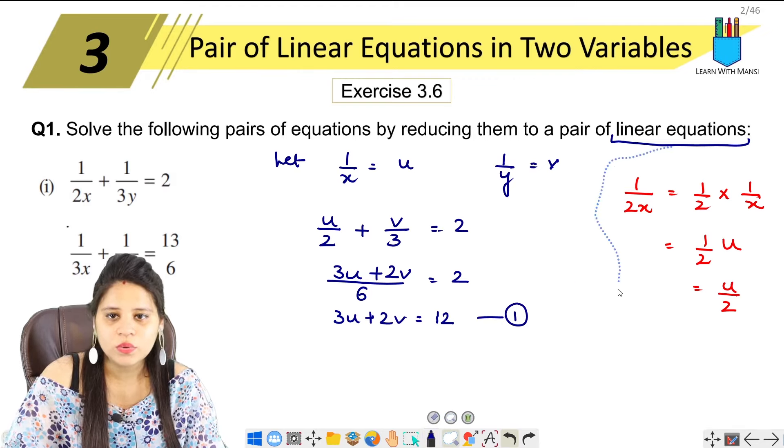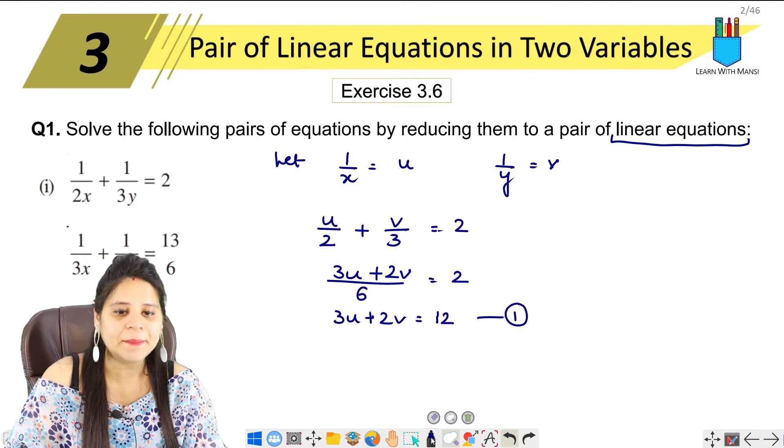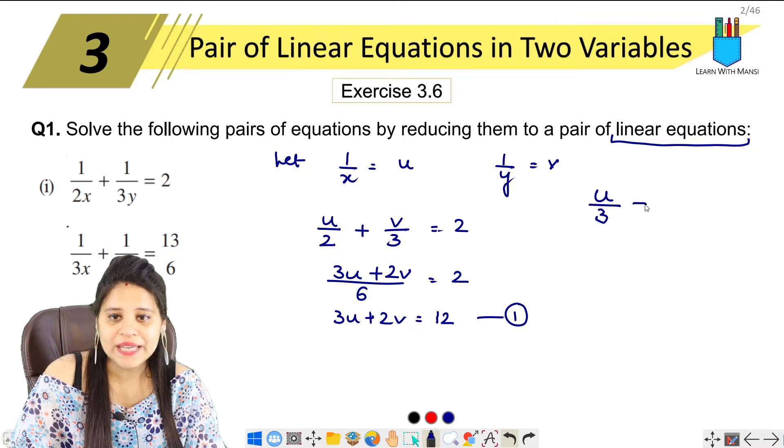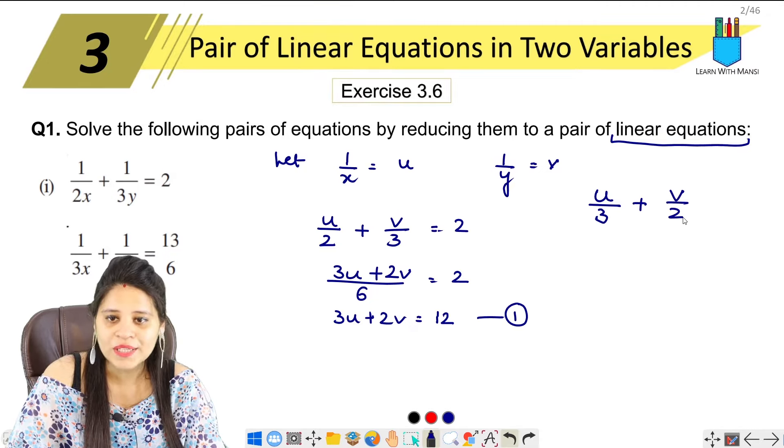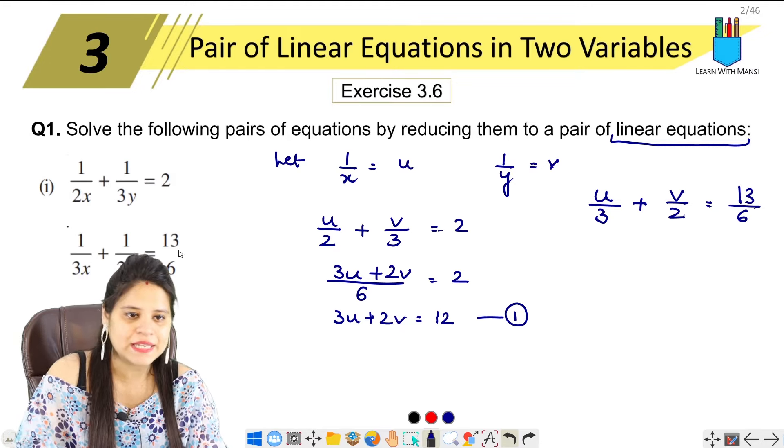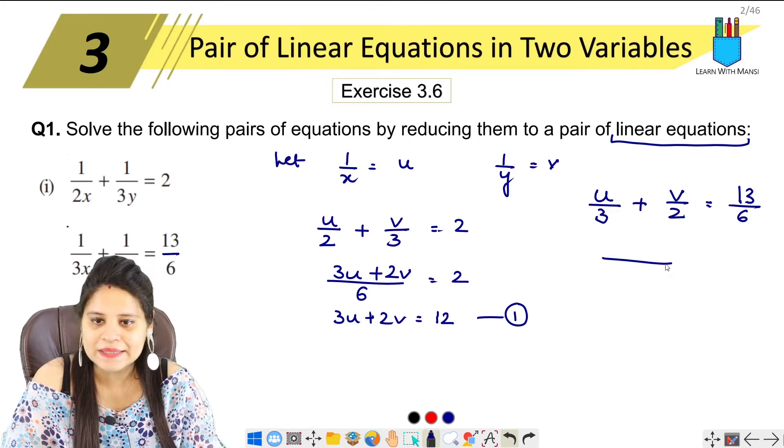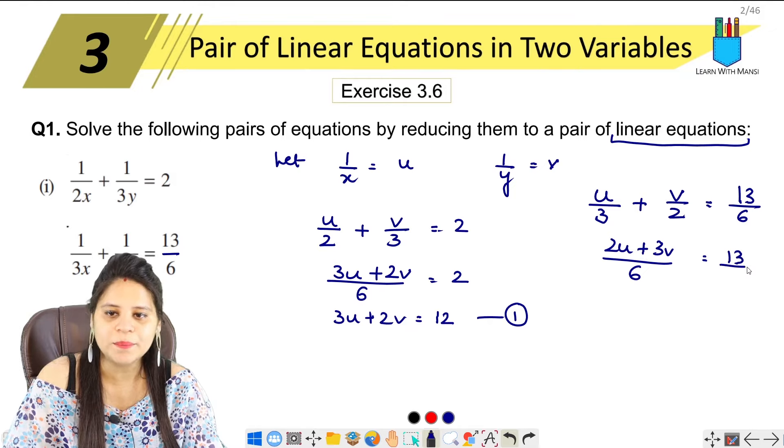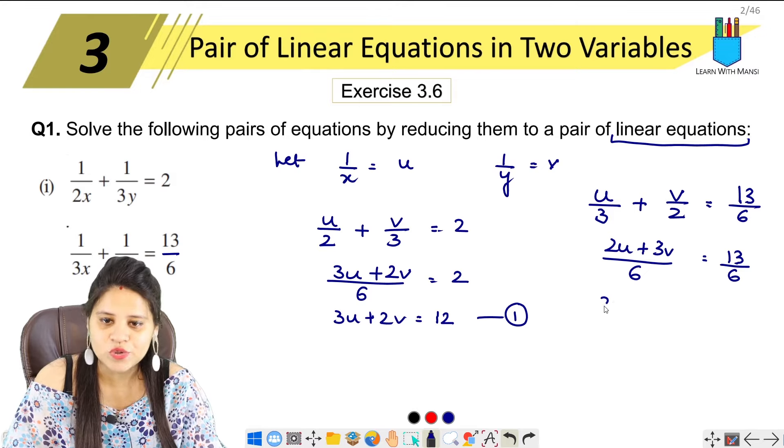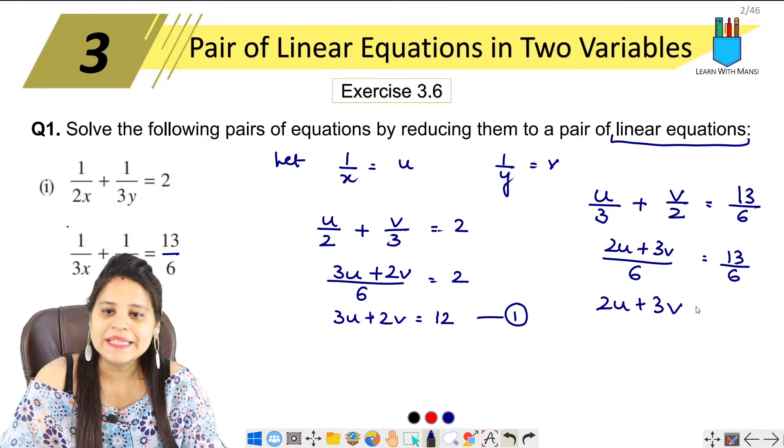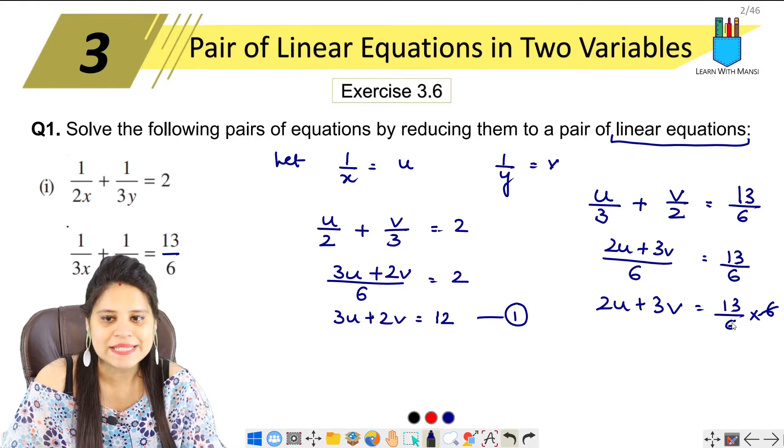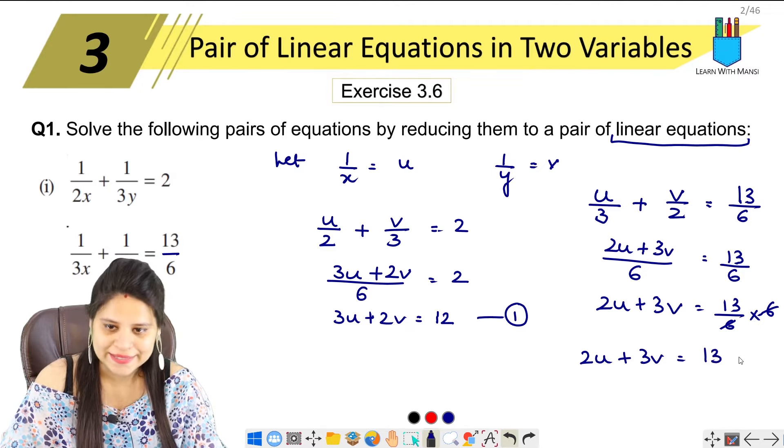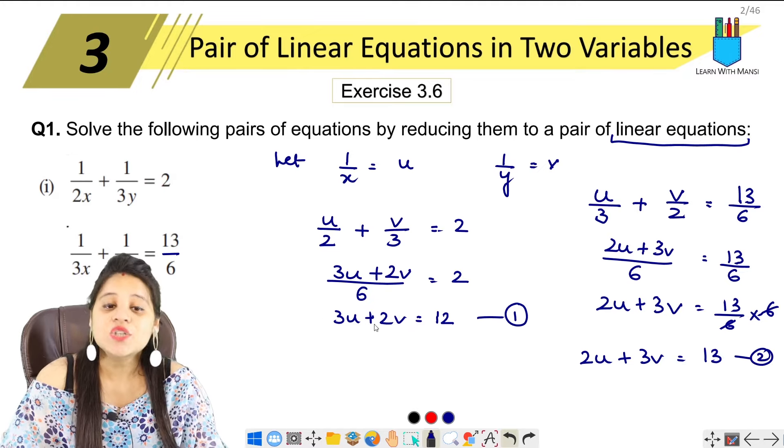Let's do the second equation. What will we get in the second equation? Look, 1 upon 3x means x is u. So, u upon 3 plus 1 upon 2y means v upon 2 equals to 13 upon 6. We can also take LCM here. 3 and 2 LCM will be 6. This will be 2u. This will be 3v equals to 13 upon 6 as it is. This will be multiplied here and divide. So, this will be 2u plus 3v equals to 13 upon 6 into 6. 6 to 6 will be cancelled. Final equation we get 2u plus 3v equals to 13. So, this is my second equation. Got it? We got these two equations.